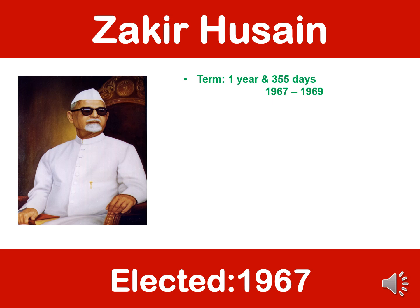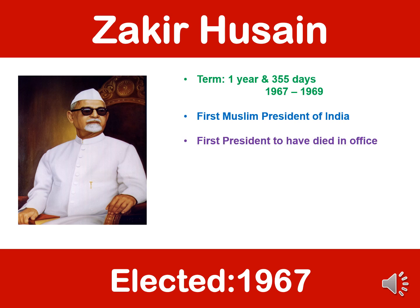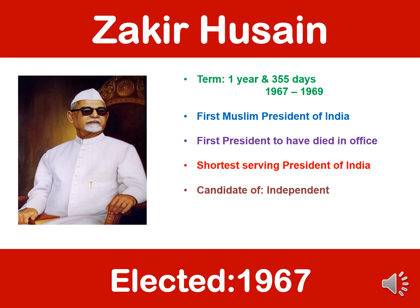The third president was Zakir Hussain. He was elected in 1967 and served a term of one year and 355 days. He was the first Muslim president of India. He was the first president to have died in office, and because of that he was the shortest serving president of India. He was also an independent candidate with no affiliation to any political party.